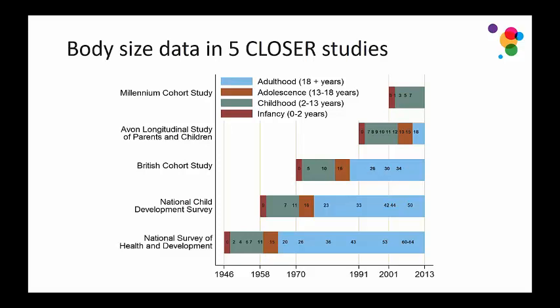This slide shows the main ages at which data was collected in each study. There are multiple measures within different stages of the life course, and measures at comparable ages across cohorts — for example around age seven and ten or eleven across all studies. With the exception of birth where only weight was collected, height and weight are available at these ages. From height and weight we can calculate BMI as an indicator of adiposity, and from BMI, age-specific cutoffs for overweight and obesity can be calculated.